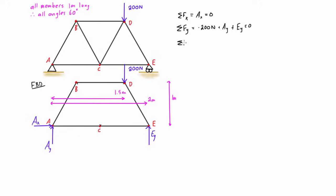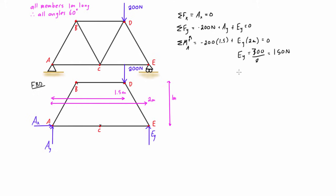We take the sum of moments about A, set equal to zero. We have negative 200 times 1.5 meters plus Ey times 2 meters, all equal to zero. Rearranging for Ey: that's 300 newton-meters over 2 meters, giving us Ey equals 150 newtons. Bringing that back into the sum of forces in the y-direction, we find Ay equals 50 newtons, and both are pointing upward.